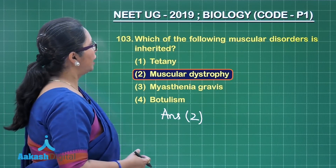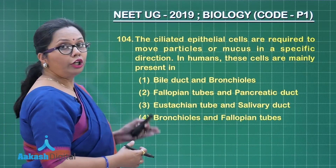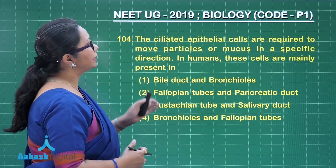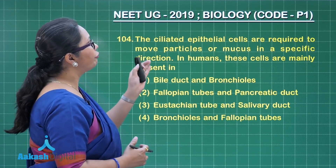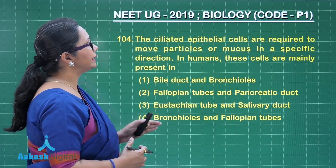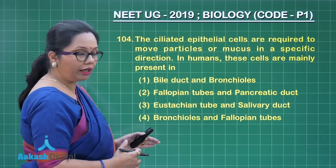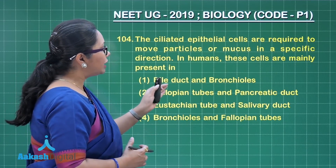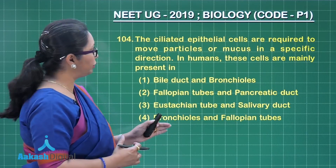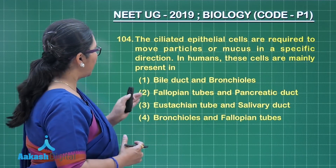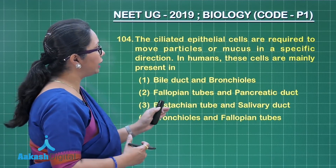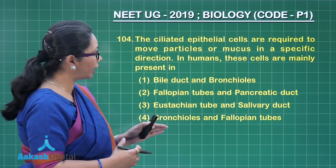Question 104: Ciliated epithelial cells are required to move particles or mucus in a specific direction in humans. Where are these cells mainly present? Bronchioles do have ciliated epithelium, but not bile duct. Fallopian tubes again have ciliated epithelium, but not the pancreatic duct.